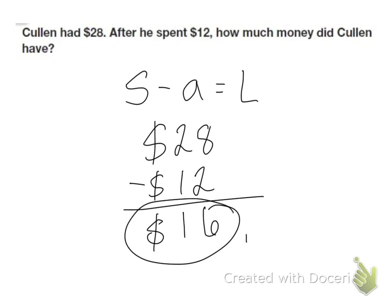To double check, I can add up. I can see if 16 plus 12 is 28. So 6 plus 2 is 8, that's correct. And 1 plus 1 is 2. So my answer is correct, $16.